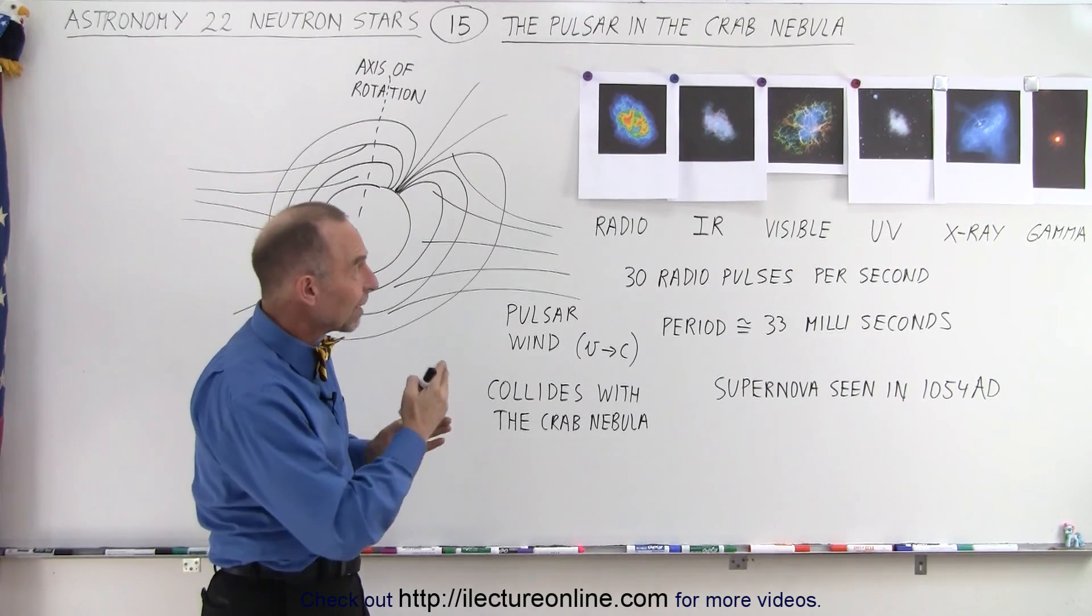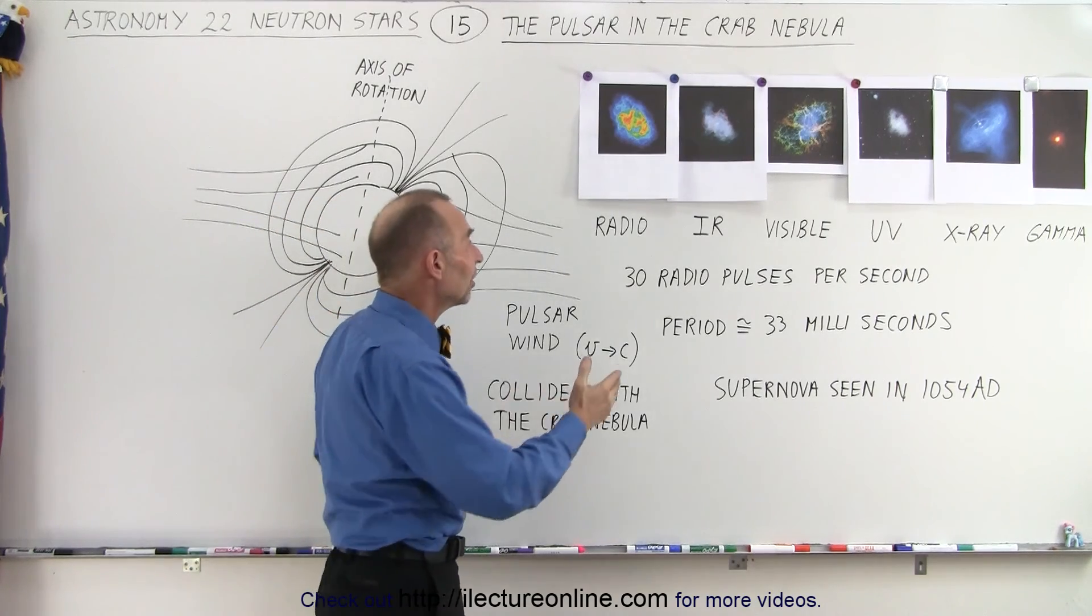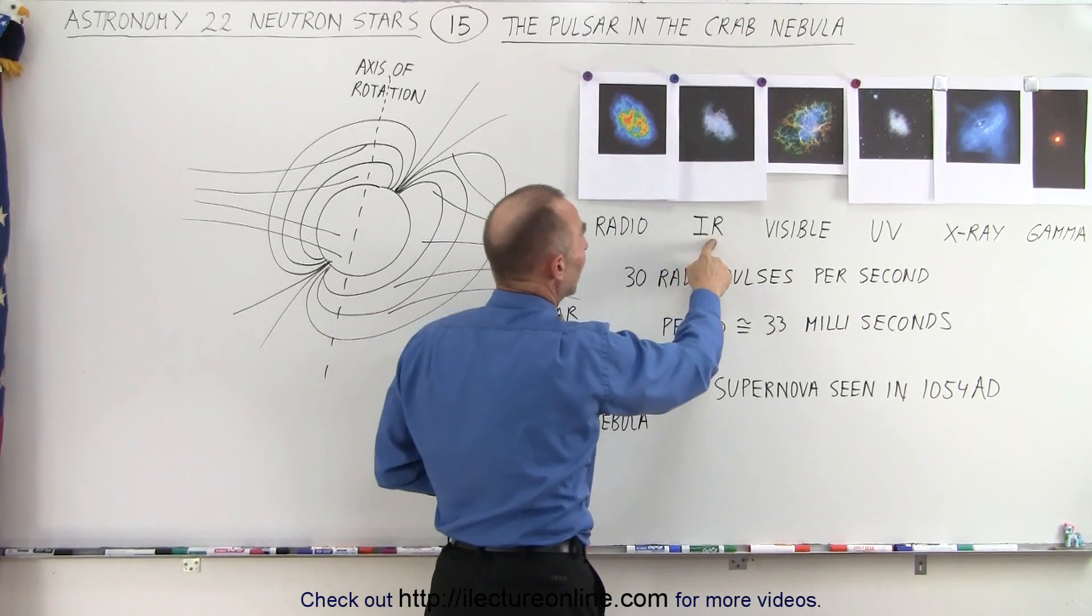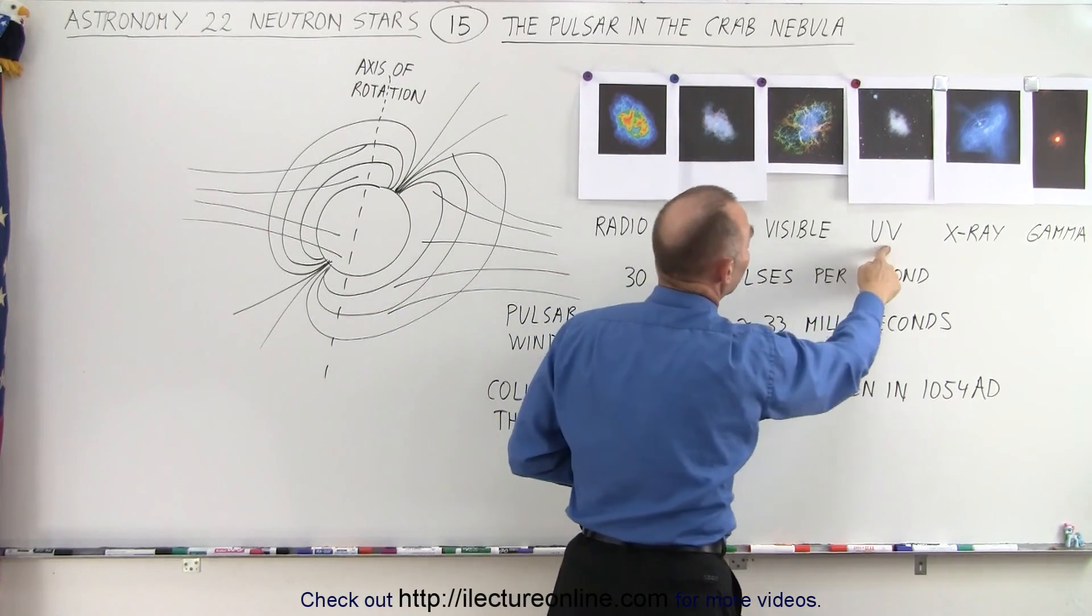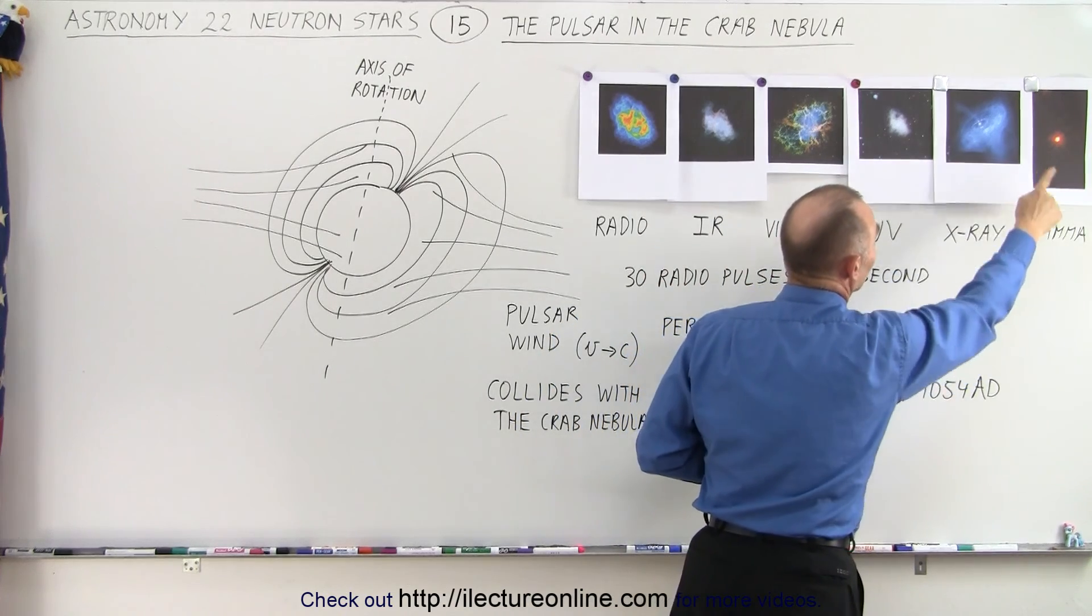But notice when we start taking pictures of the Crab Nebula in different light frequencies or E&M frequencies: in radio it looks like this, in infrared it looks like this, in UV it looks like this, in x-rays it looks like this, and in gamma rays it looks like this.